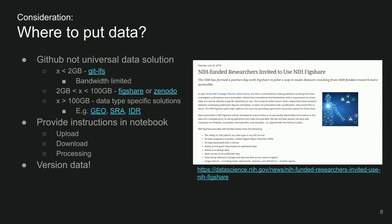An important consideration is where to put data. GitHub is not a universal data solution. You can use Git LFS to manage files up to two gigabytes, but those are bandwidth limited. For intermediate-size data, there are solutions like Figshare and Zenodo that do a nice job of versioning data and assigning a DOI — with a fuzzy 100 gigabyte ceiling where you can request more storage. For data much bigger than that, you'll likely need a data-type-specific solution like GEO or SRA for gene expression data or sequences, or IDR for images.